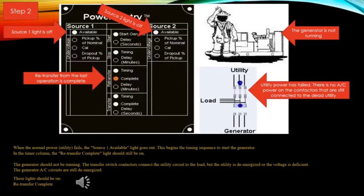The re-transfer from the last operation is still indicating complete. Source two light is not on and will not come on until the generator starts. The generator is not running. The utility power has failed, and there is no AC power on the contactors that are still connected to the dead utility.